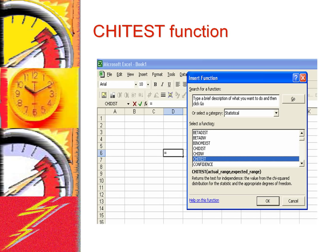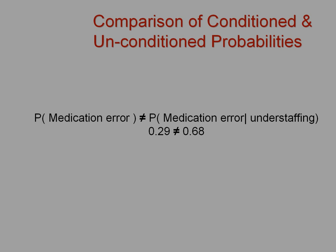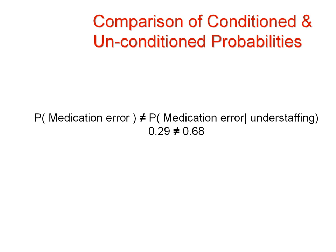For our example, the chi-squared statistic was 23. The probability of finding such a high chi-squared statistic is 0.0001. Therefore, we reject the hypothesis that the two variables are independent of each other. We could also compare the probability of medication error with and without conditioning on understaffing. If the two variables are independent, conditioning on understaffing should not change the probability. This is not the case.